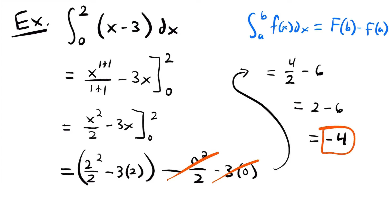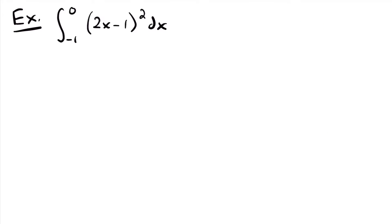And so that would be the final answer to this definite integral. Let's look at another example. For our next example, we have the definite integral from negative 1 to 0 of (2x minus 1) squared. The first thing we're going to want to do is square this term, and then we'll be able to integrate each term that results from the expansion.